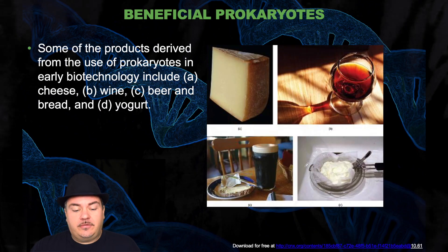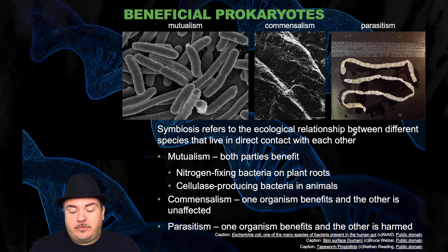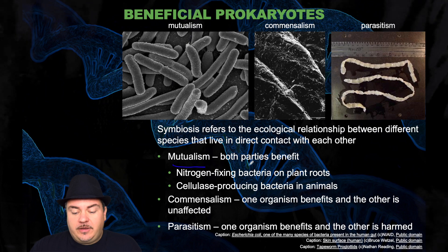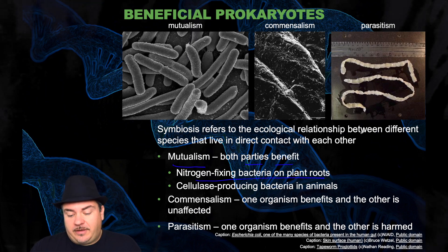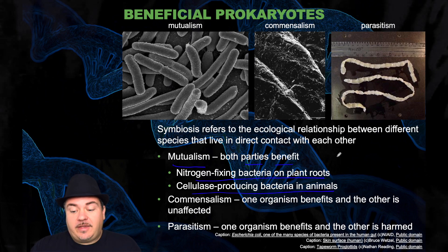Some products derived from the use of prokaryotes in early biotechnology include cheese, wine, bread, beer, and yogurt. Bacteria can interact with us in different ways. Symbiosis refers to the ecological relationship between different species that live in direct contact with each other. There are three types: mutualism, where both parties benefit — examples are nitrogen-fixing bacteria and plant roots, and cellulase-producing bacteria in animals like termites, which can eat wood because the bacteria in their guts break down the cellulose.